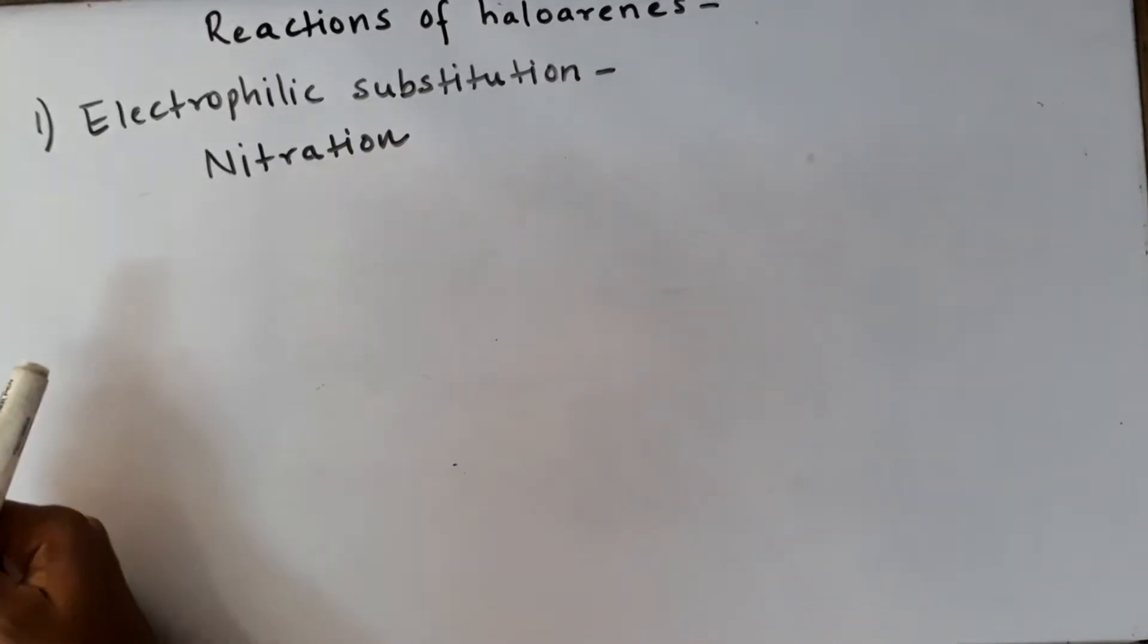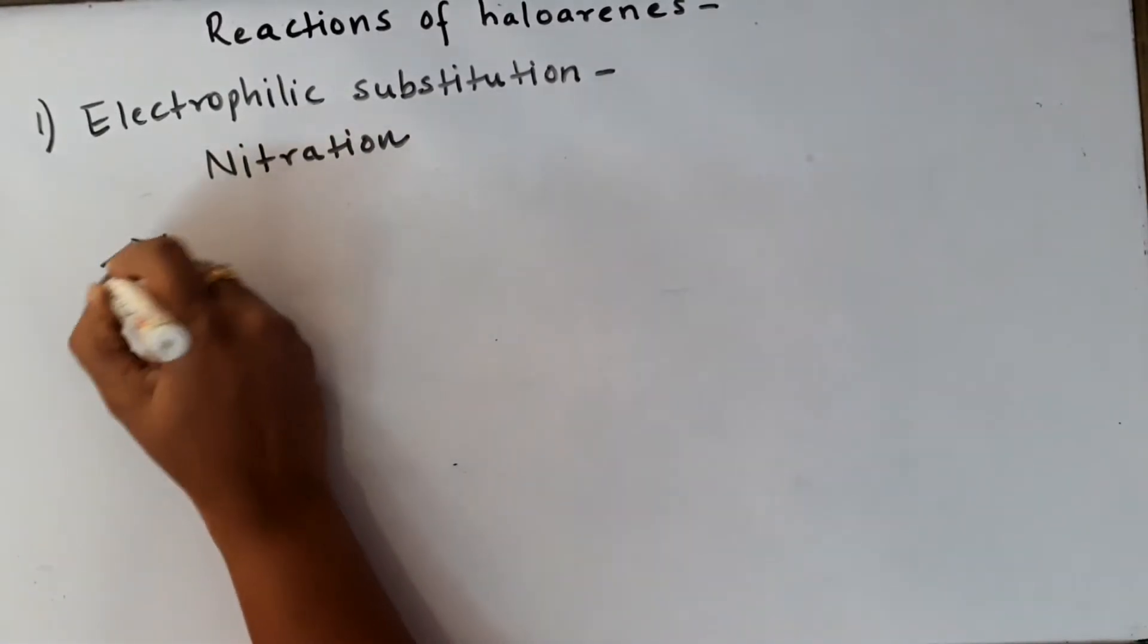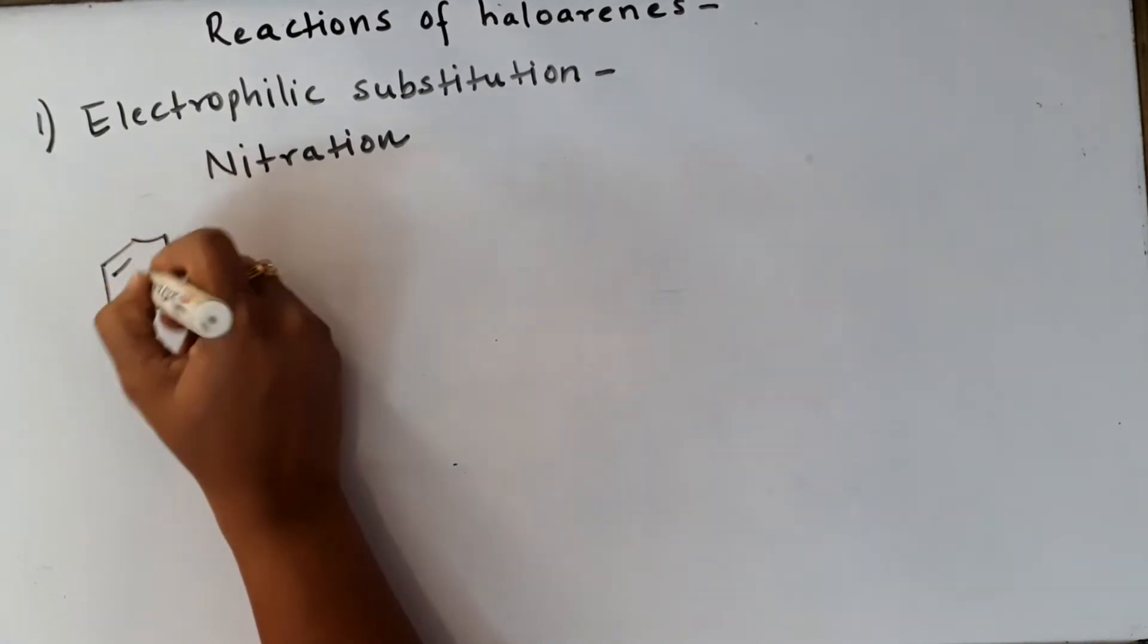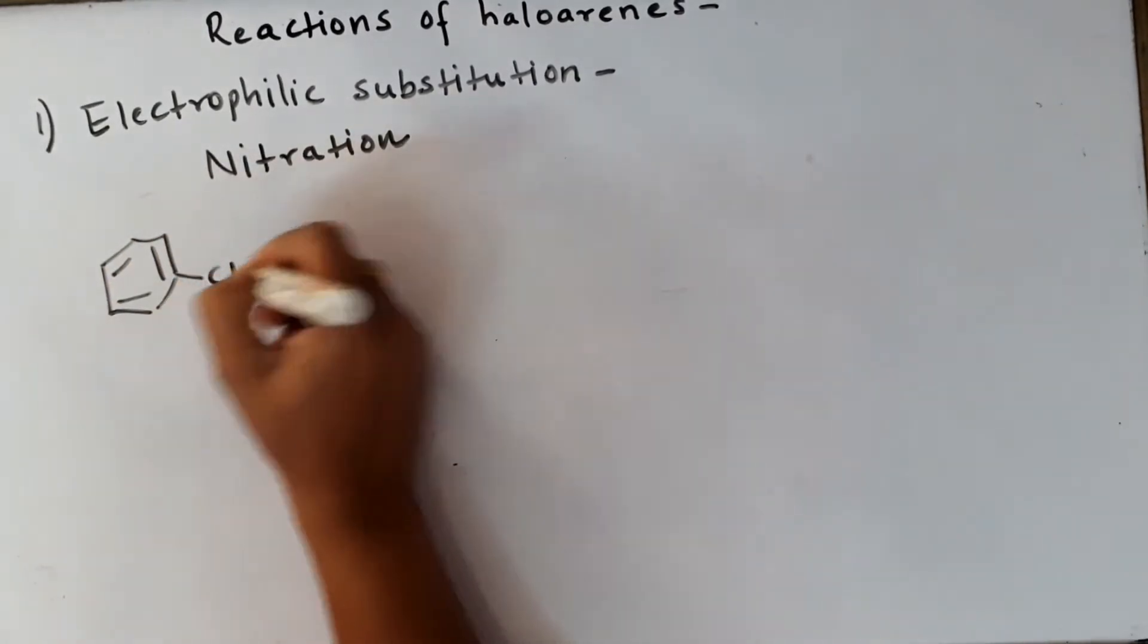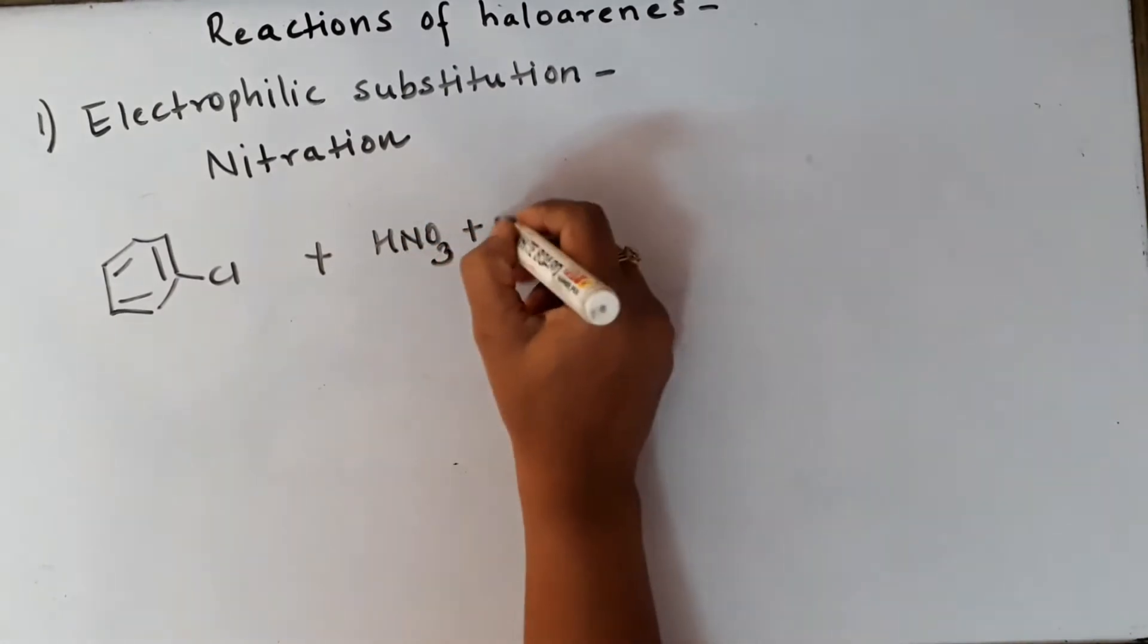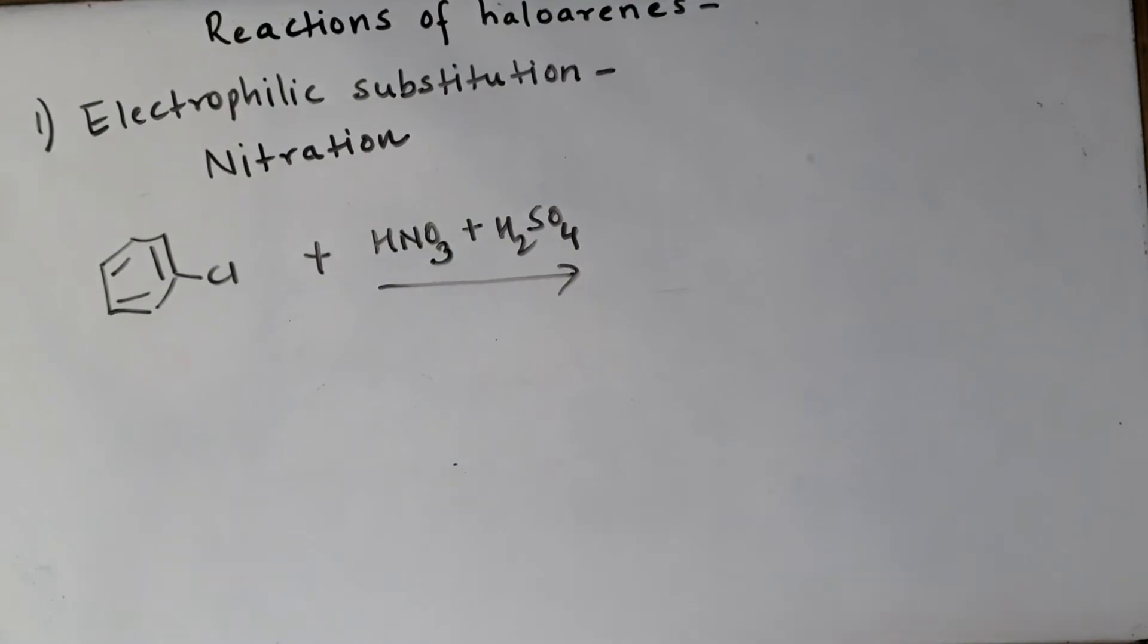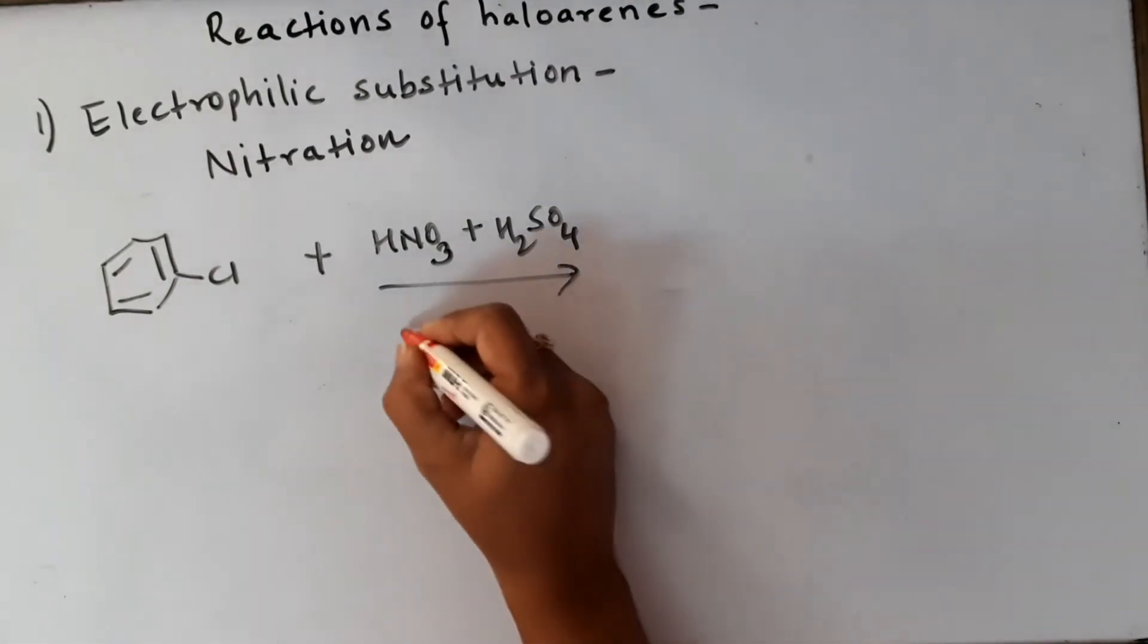Now let us see the second electrophilic substitution reaction of benzene, that is nitration. For nitration we will take again the same substrate chlorobenzene and react it with a mixture HNO3 plus H2SO4 concentrated. This is called nitrating mixture. This can be one more question in the exam.